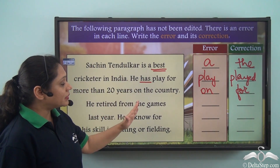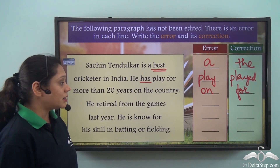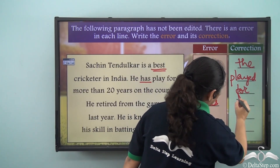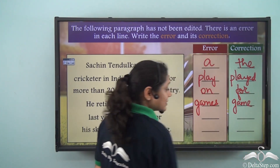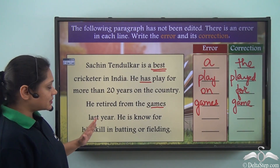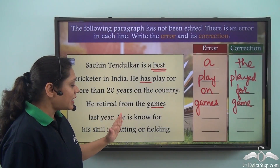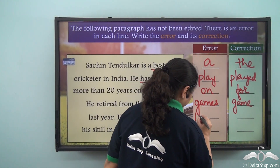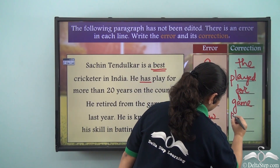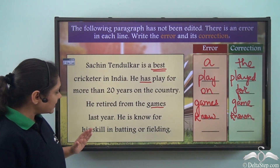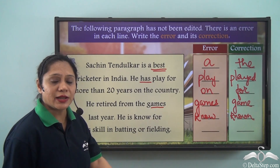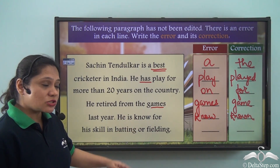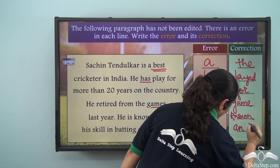'He retired from the games last year.' Here we are referring to one particular game, so 'games' is the error and 'game' is the correct word. Now 'he is known for his skill in batting or fielding' — he is known for both batting and fielding, so 'or' is not correct. It should be 'and'.